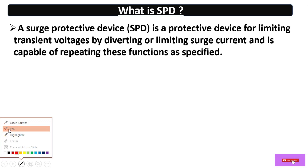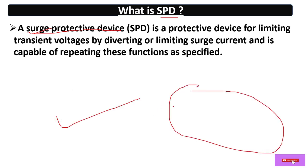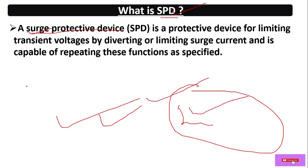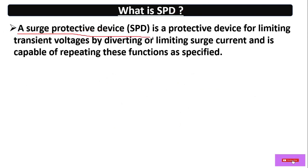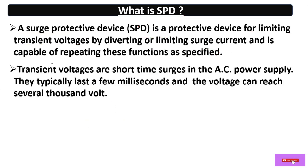SPD stands for Surge Protection Device. This device can protect from transient voltage, surge current, and inrush current. It suppresses these two factors: transient voltage and surge current. A surge protective device is a protective device for limiting transient voltage by diverting or limiting the surge current, and is capable of repeating this function. Simply, it will protect devices or loads by diverting transient voltage and surge current towards the earth.